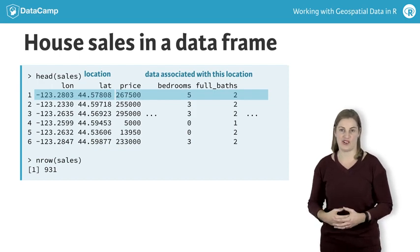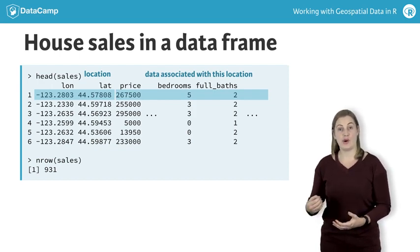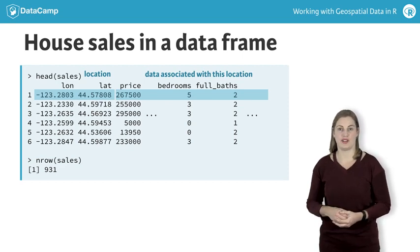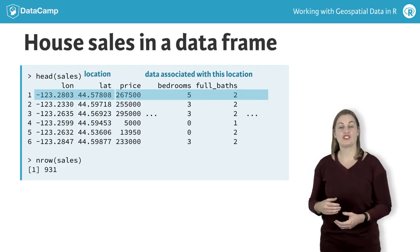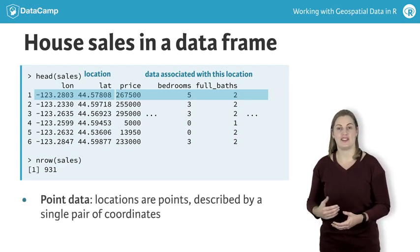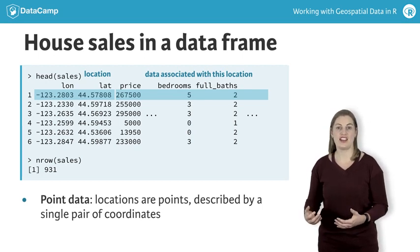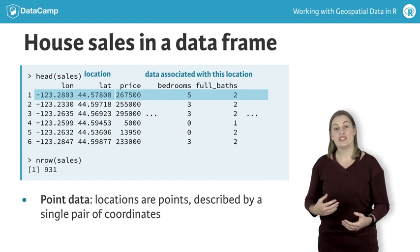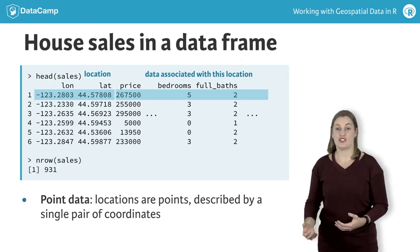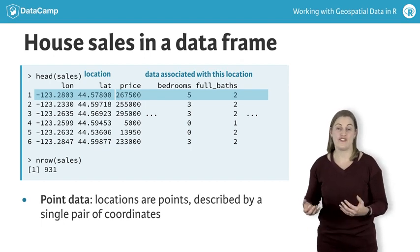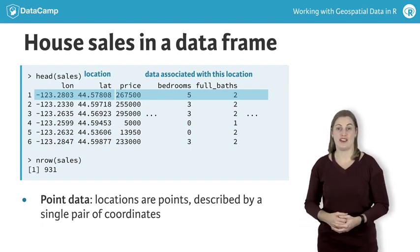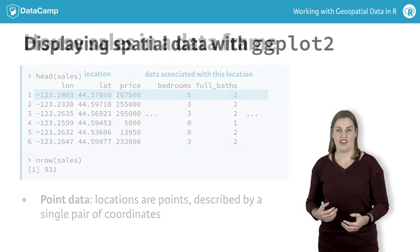And then all the other columns describe other attributes of that sale: the sale price, number of bedrooms, etc. When the data is associated with point locations — that is, a single set of spatial coordinates — we describe it as point data. You'll see some other types of spatial data in the last section of this chapter.